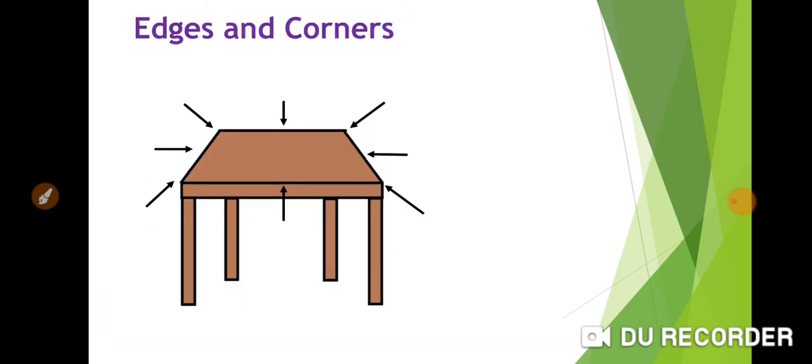Now you can see one table here. Let's see the edges and corners of this table. See, this table has four edges and four corners.